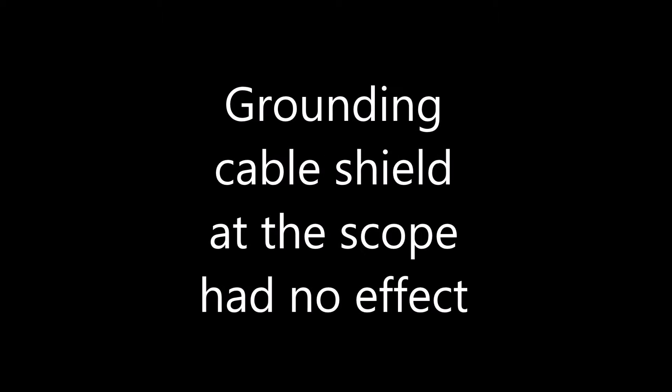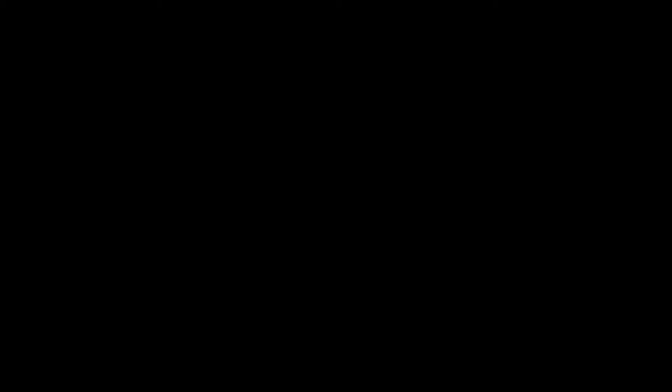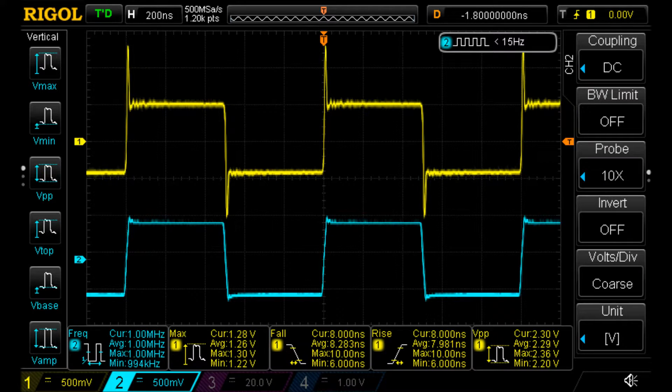Grounding the shield of the cable at the scope had no noticeable effect. So this raises another interesting question. Is it the capacitance of the coax cable that I'm running to my scope from the signal generator? Or is it the reflection up the lines?